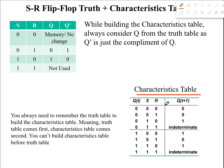In the left part we have three separate variables: Q, S, and R. In the right part we're just going to write the next state Q(t+1). Since there are three separate variables in the left part, that means we will get eight different combinations, from zero to seven — all the binary numbers are written here. What we need to understand is how we would write the next state values, and why it's written as zero, one, or indeterminate.